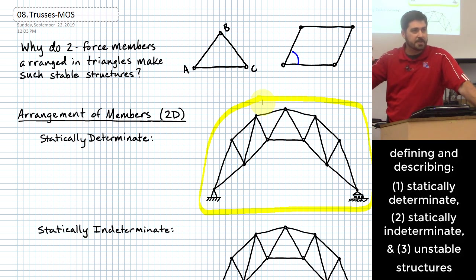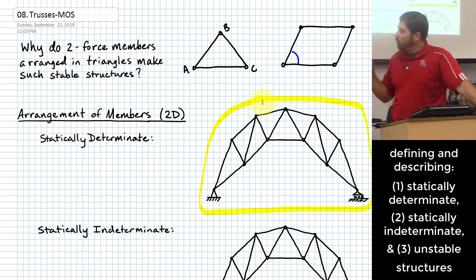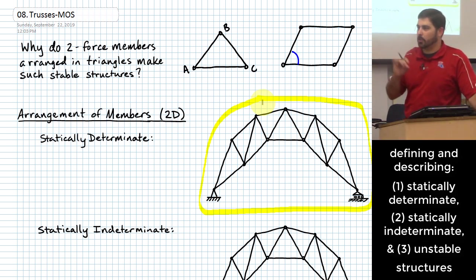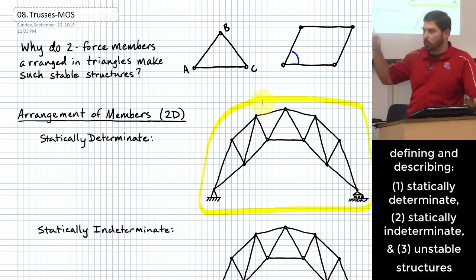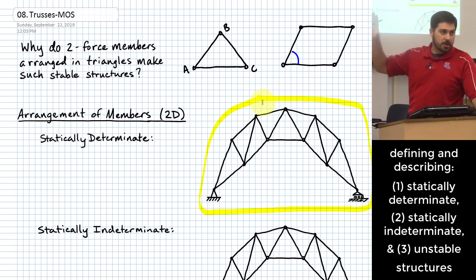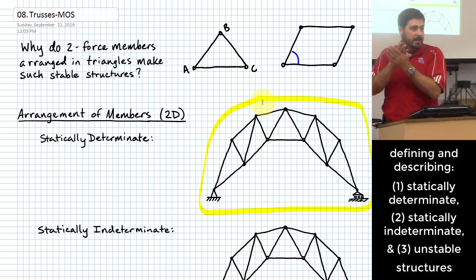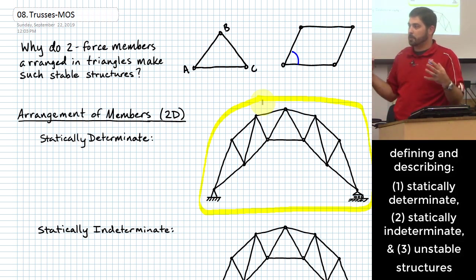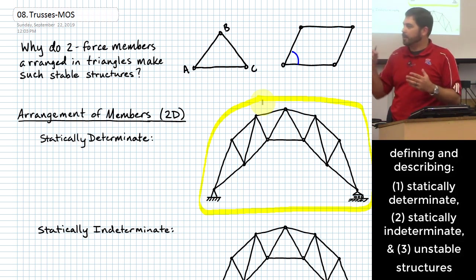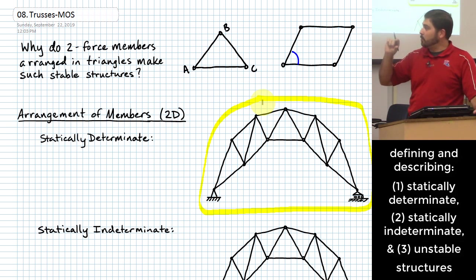I'm counting all equations, not just those to find external reactions. One way of thinking about it is that equilibrium for the entire structure is a consequence of each joint being in equilibrium. Doing a free body diagram of the whole structure robs a principle from the idea that every joint is in equilibrium — the whole thing being in equilibrium is already implied by each joint being in equilibrium. That's why in our last problem we wound up with three extra equations at the end.